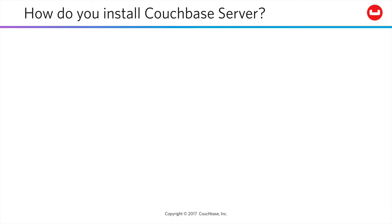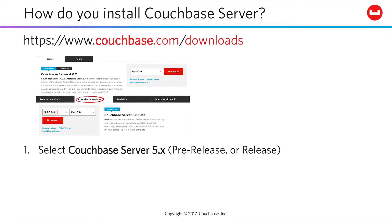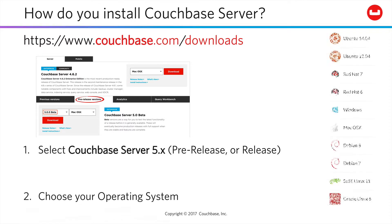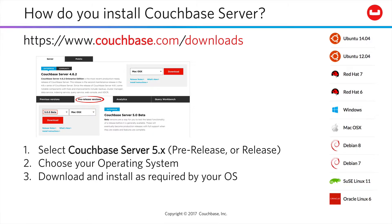To install Couchbase Server, go to couchbase.com/downloads to download Couchbase Enterprise Edition 5, whether the beta or release version. Choose your operating system, and then download and install the assets as required by your operating system. Or if you prefer to work with a containerized instance, go to couchbase.com/containers.